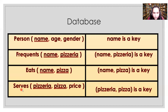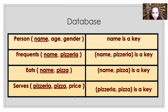The serves table has pizzeria and pizza together forming the primary key, with columns pizzeria, pizza, and price. This tells you that a particular pizzeria serves a particular pizza at a particular price — for example, Domino's serving pepperoni pizza at $2. That is the database we will use to answer the queries in the next sections. So let's get started.